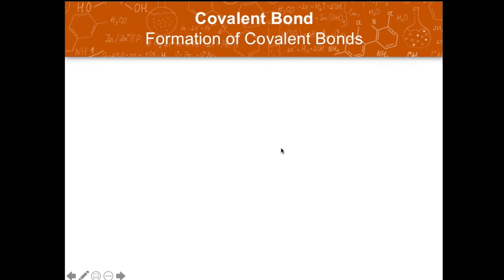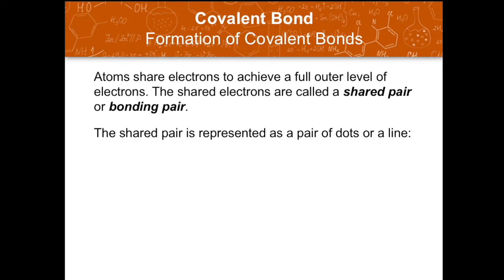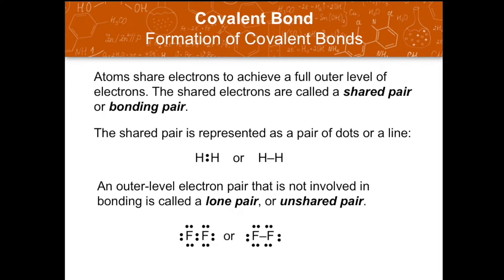Since in covalent bonding there is electron sharing, the shared electrons are called a shared pair or bonding pair. We usually use a solid line between the two atoms or element symbols to represent a two-electron bond. Hydrogen is called a diatomic element because it contains just two atoms.